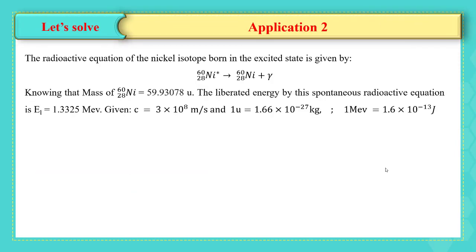In application 2, we have a nickel element in the excited state that de-excites into nickel with emission of gamma radiation. In the given data, we have the mass of the daughter nucleus and the liberated energy from this decay. The conversion units from u to kilogram and from mega electron volt (MeV) to joule are also provided. In the first question, we have to calculate the mass defect.